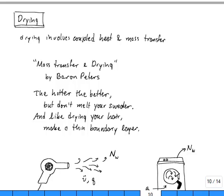Alright, in this lesson we're going to talk about drying. Drying does involve coupled heat and mass transfer, but we'll see that the Chilton-Colburn analogy plays a pretty small role here, although we will use it towards the end.